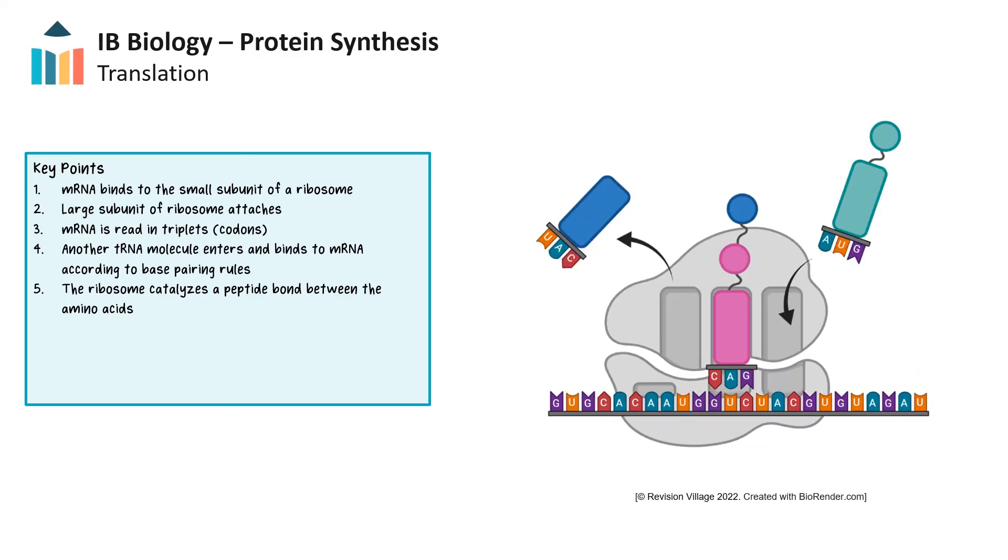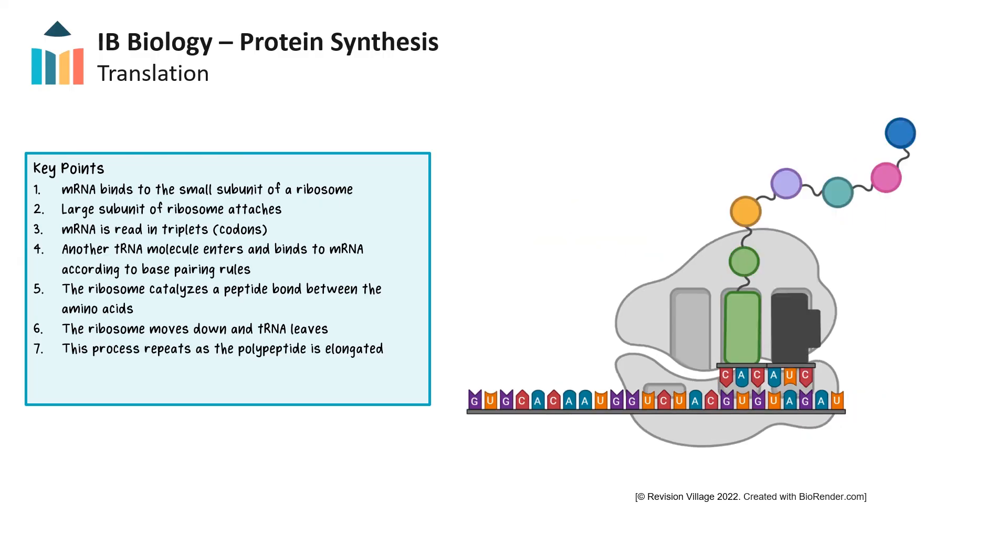When the ribosome moves down, the first amino acid detaches from the first tRNA, and that tRNA will leave the ribosome. The ribosome moves down the length of messenger RNA, one codon at a time, leaving space for another molecule of tRNA to enter. As this piece of tRNA enters, the tRNA anticodon will pair with the messenger RNA codon to bring the specific amino acid. A peptide bond forms between amino acids and the polypeptide chain elongates. This process continues until the polypeptide chain is complete.